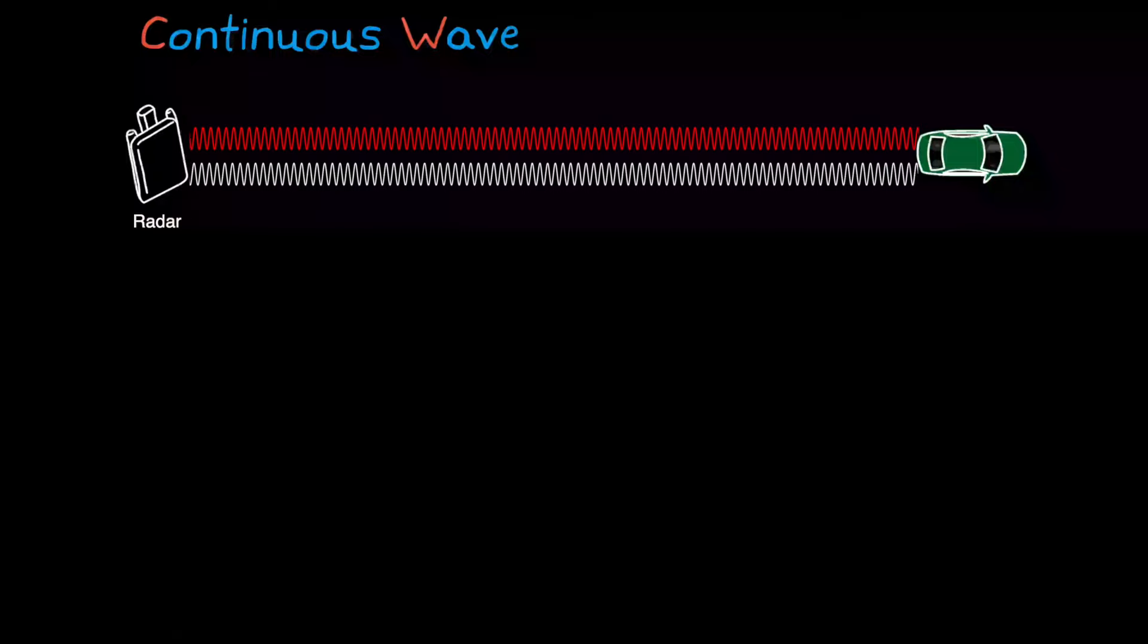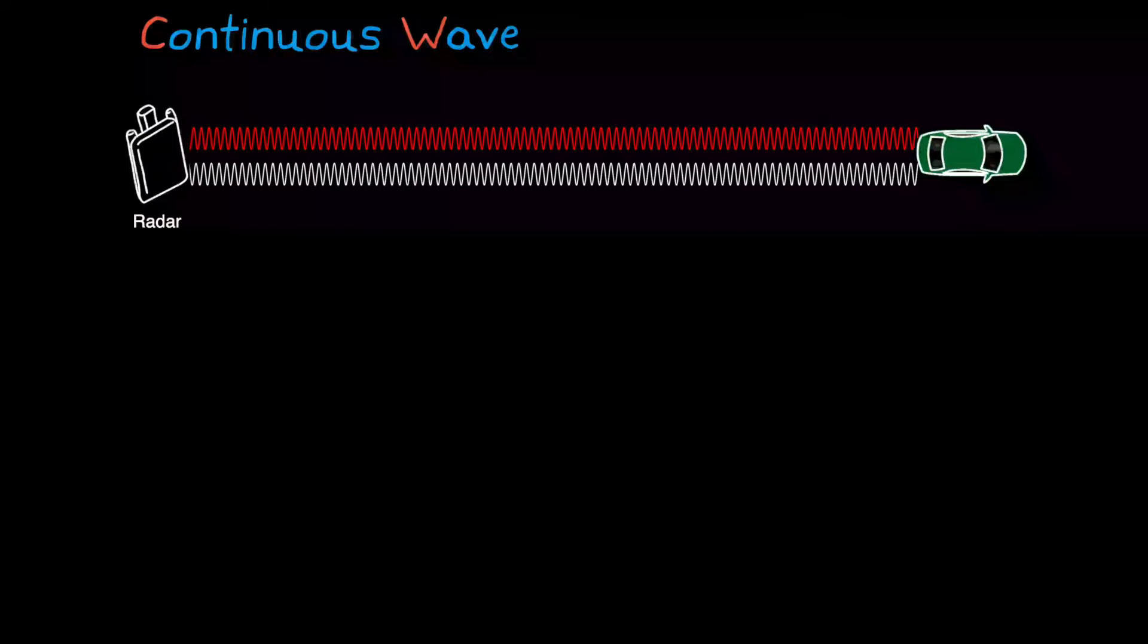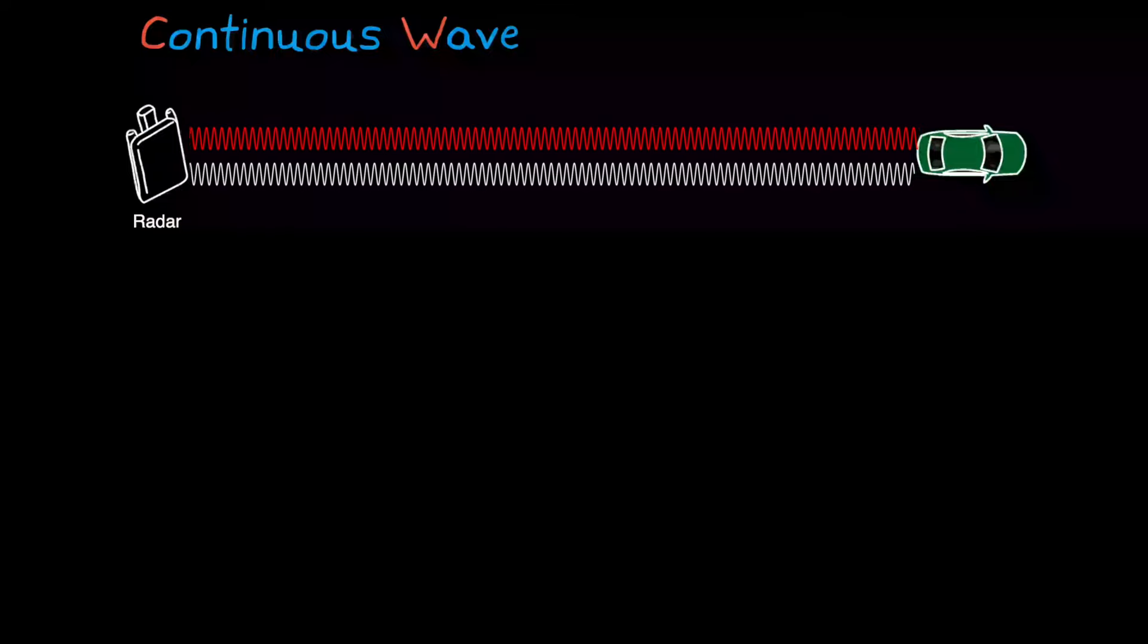To begin, let's look at the second half of FMCW. What is continuous wave radar? As the name suggests, this is a type of radar system that transmits a known stable frequency continuously. That wave propagates out, reflects off an object, and is received continuously by the radar.